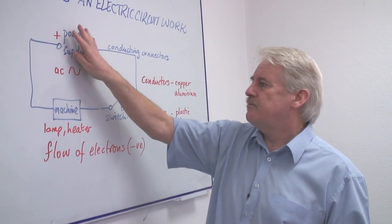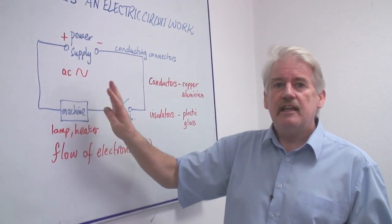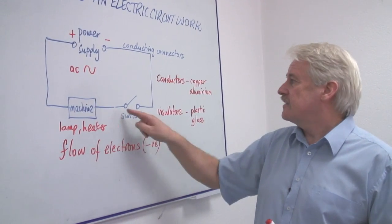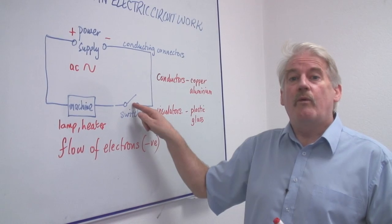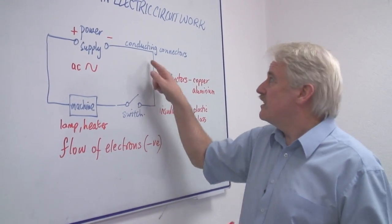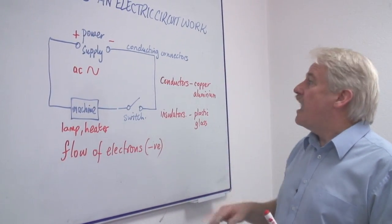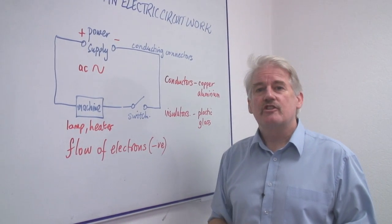So we have the supply of power. We have the machine that needs the power to work. And in it, we usually include a switch so that we control when it's on or off. So in this way, now we know exactly how an electric circuit works.